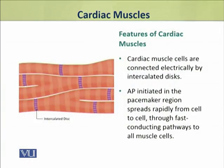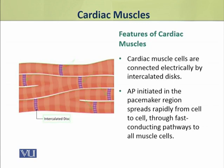The cardiac muscles are connected with each other through intercalated discs. These intercalated discs electrically connect the cells. This is why the action potential generated in the heart travels rapidly from one cell to the other cell through fast-conducting pathways.